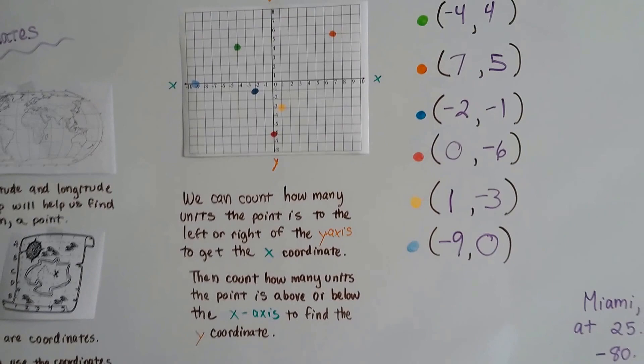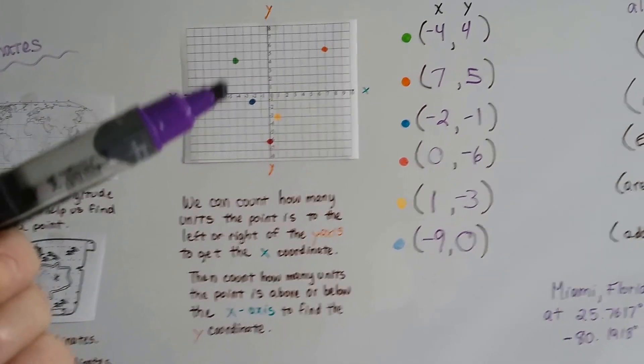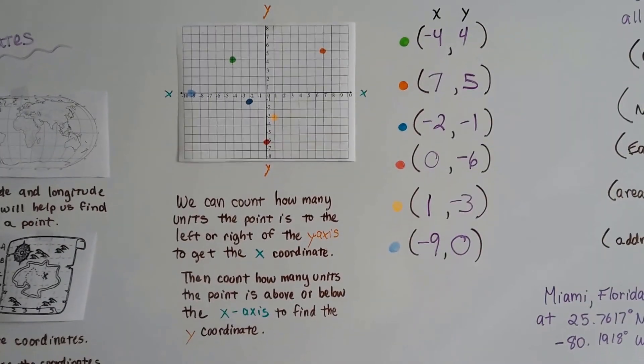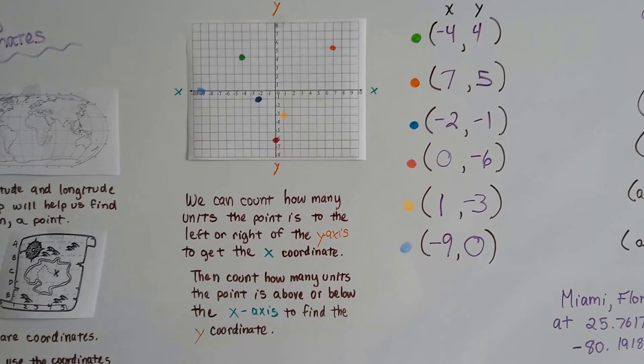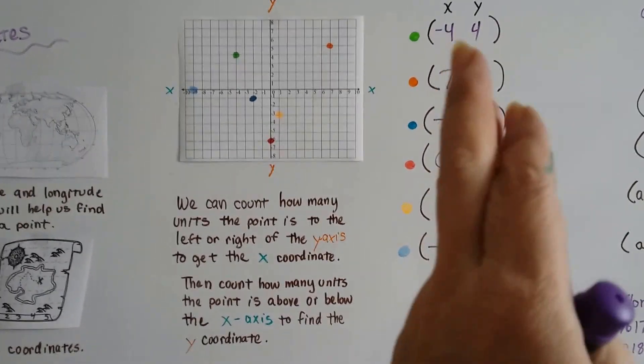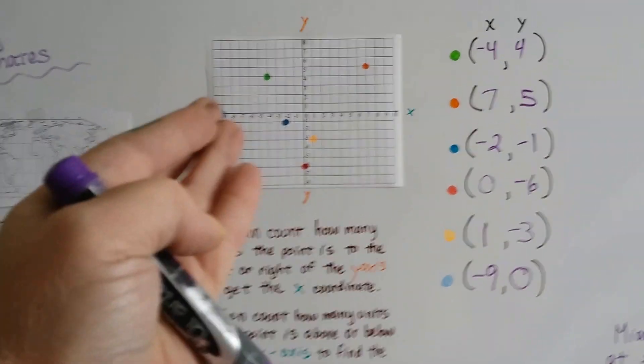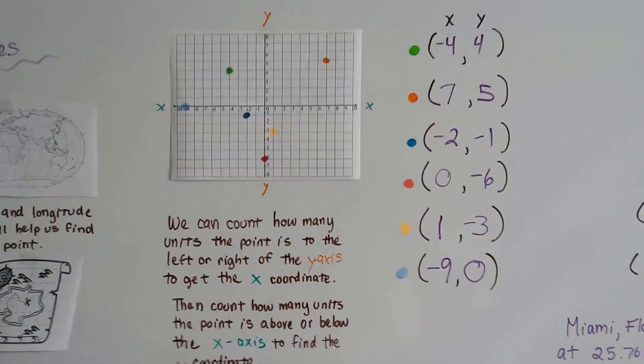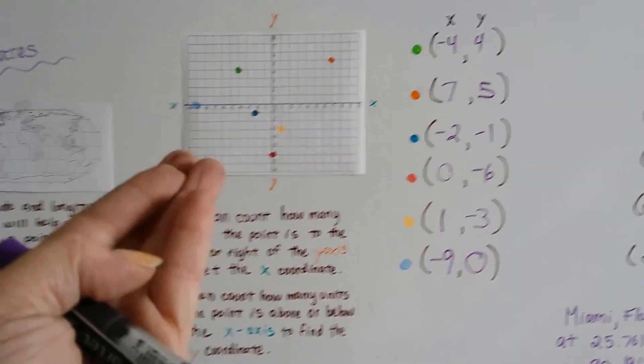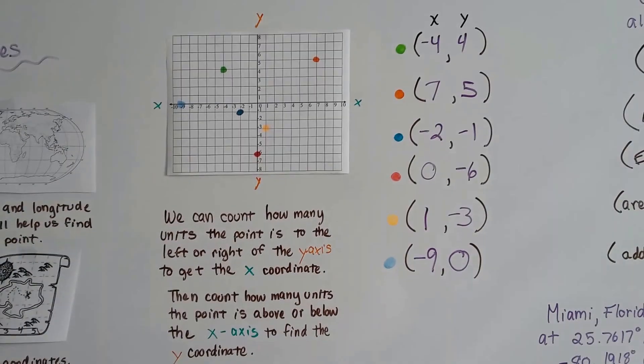So that's how we find coordinates. We actually take the points that are already plotted, and then we find what the ordered pairs are. It's the opposite of plotting points. With plotting points, we know what the ordered pairs are, and then we have to put the points on the grid. For finding the coordinates, it's the opposite. We take the points and find the coordinates.